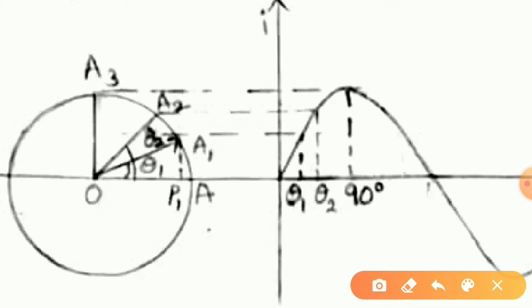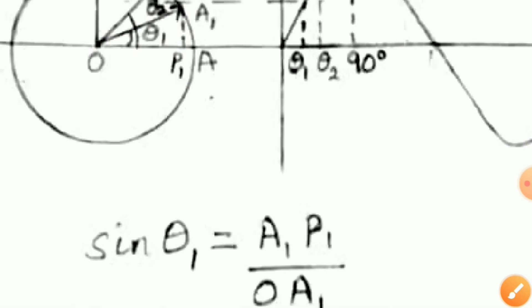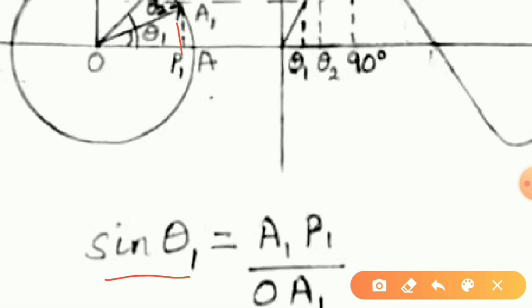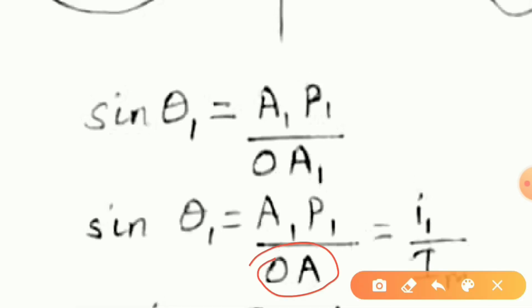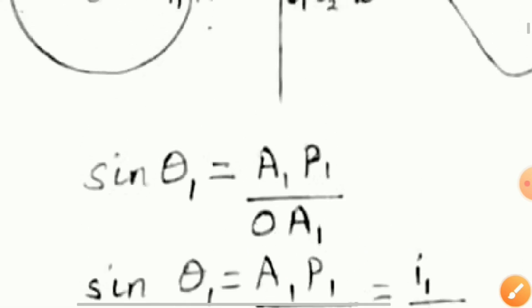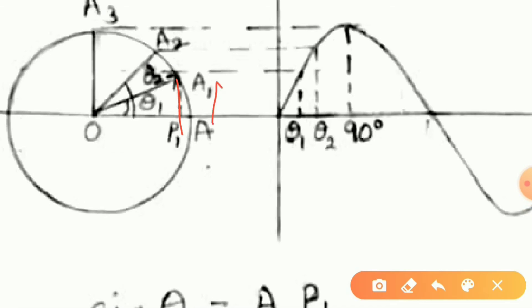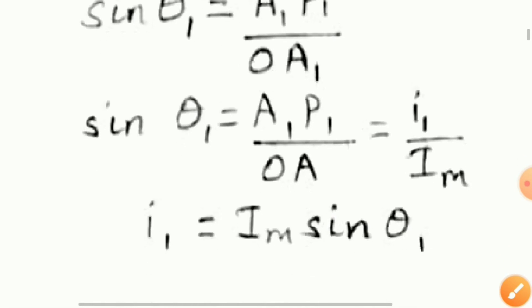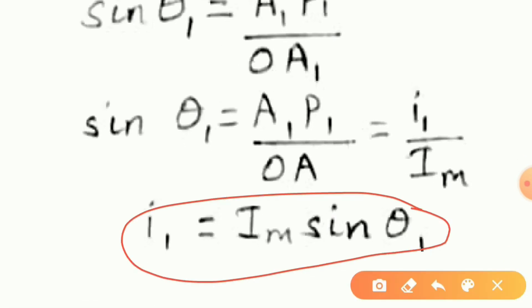If we consider a right-angled triangle O, P1, A1, we can write the equation as sin theta 1 is equal to A1P1 upon OA1. As the radius of all the vectors is the same, we replace A1P1 as I1 and OA1 as maximum current IM. Hence we get the equation as I1 is equal to IM sin theta 1.